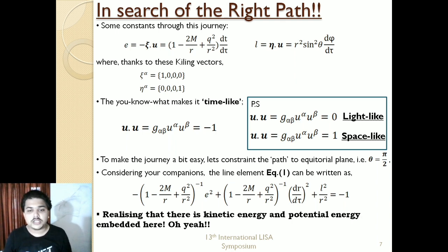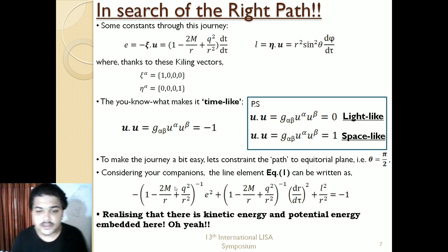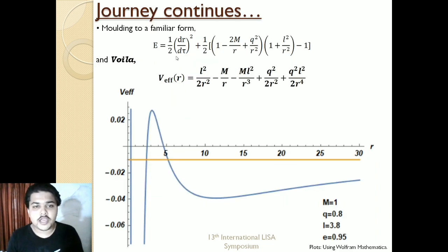To make our process easier, we will be concentrating the path to an equatorial plane where theta equals pi by two. Using all these companions and modifying the line element of the RN spacetime, we will have this equation. You can clearly see the kinetic energy term, and this can be modified into a form where we can call it the equation of energy. Molding it into a familiar form, we have the equation of energy, and voila, you have the effective potential.